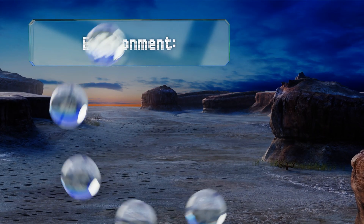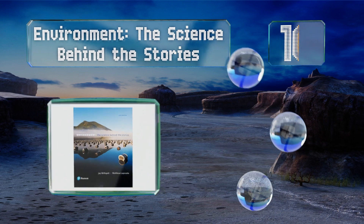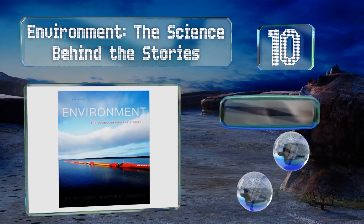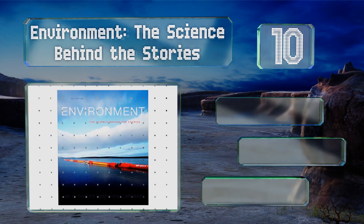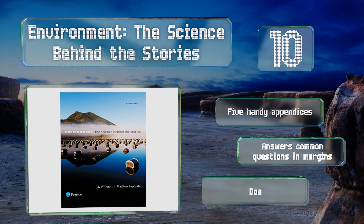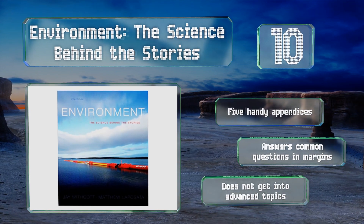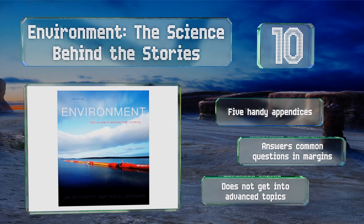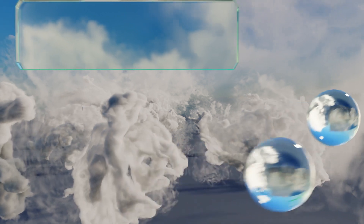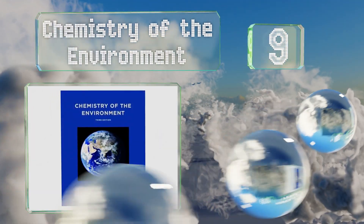Starting off our list at number 10, 'Environment: The Science Behind the Stories' uses a student-friendly narrative style and an abundance of case studies and real situations to help readers connect the dots. It frames each dilemma as an opportunity to encourage and motivate rather than overwhelm, and includes five handy appendices and answers to common questions in the margins. However, it doesn't go into advanced topics.